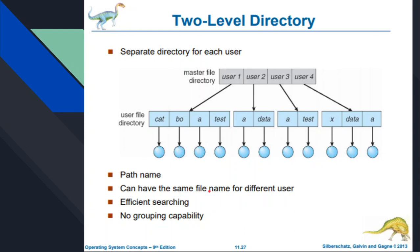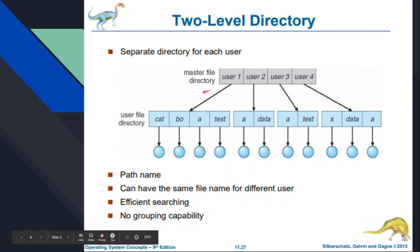Different users can have the same file name. Efficient searching is possible — we can go through user by user and directory by directory. However, no grouping capability is possible here.